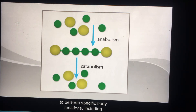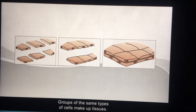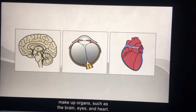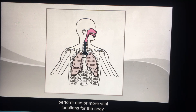Groups of the same types of cells make up tissues, and two or more different types of tissues make up organs, such as the brain, eyes, and heart. Finally, groups of body structures and/or organs make up body systems, which perform one or more vital functions for the body.